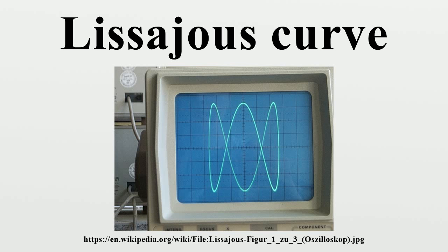A purely mechanical application of a Lissajou curve with A=1, B=2 is in the driving mechanism of the Mars-type oscillating beam lamps popular with railroads in the mid-1900s. The beam in some versions traces out a lopsided figure-eight pattern with the 8 lying on its side.